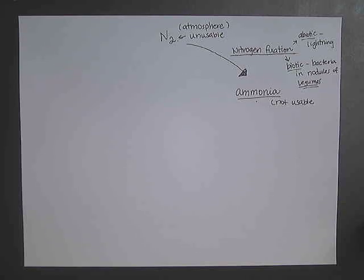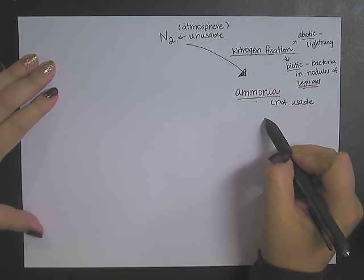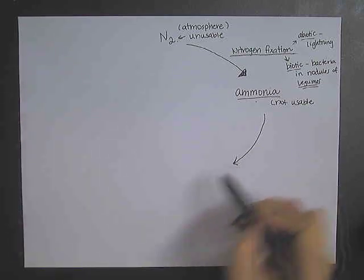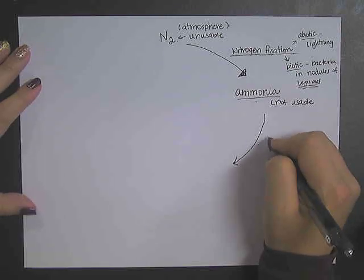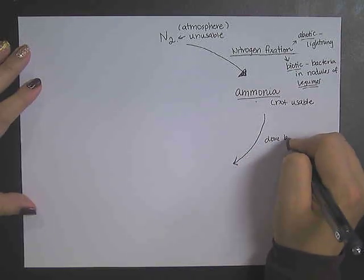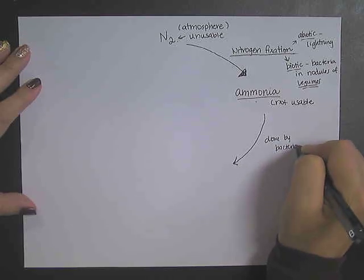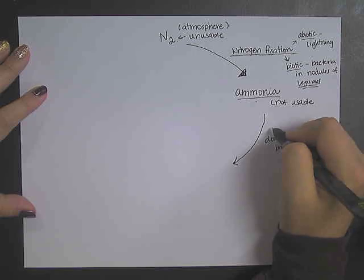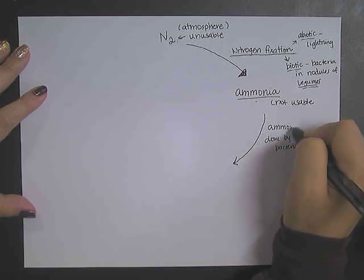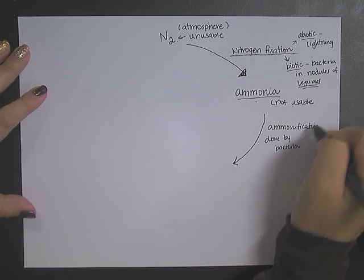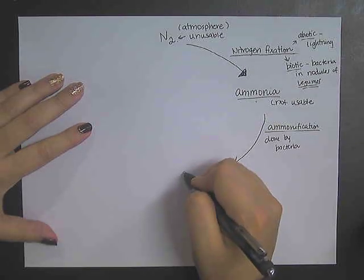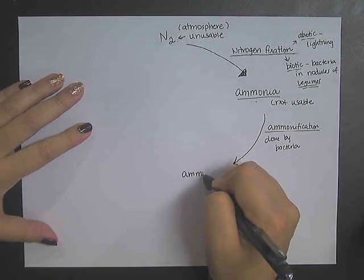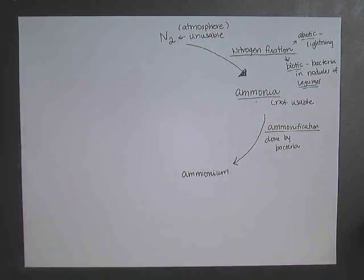So what's going to happen is we're going to take this ammonia and convert it into a different form, and this also can be done by bacteria. Many textbooks will call this process ammonification. So that ammonia is going to form a compound called ammonium.